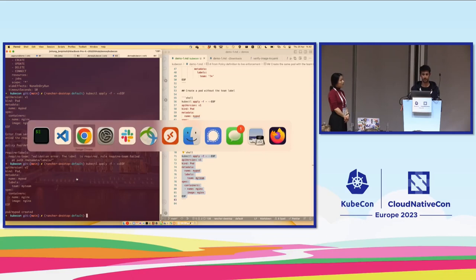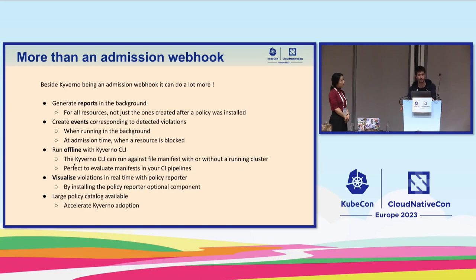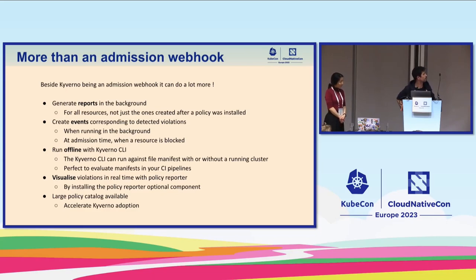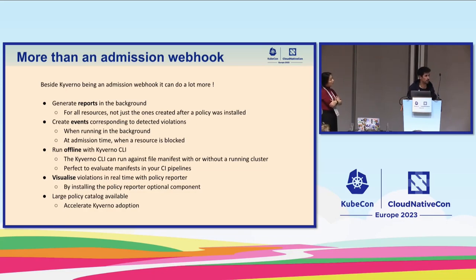That's almost it for the introduction. One last thing to note: Kyverno is more than just an admission webhook. Beyond the admission part, it generates reports in the background for all resources — not just resources created after a policy was installed. It creates events in the cluster corresponding to detected violations, and it can run offline with the Kyverno CLI, making it a perfect candidate to evaluate resources against policies in CI pipelines. You can also visualize violations in real time with the optional Policy Reporter component, and there is a large policy catalog available to accelerate Kyverno adoption.